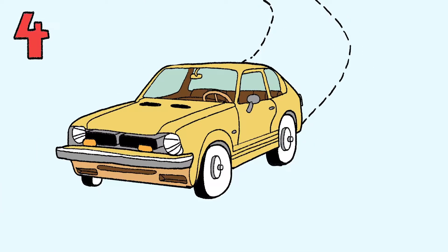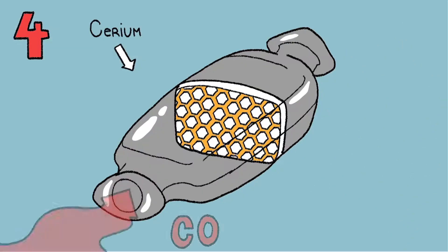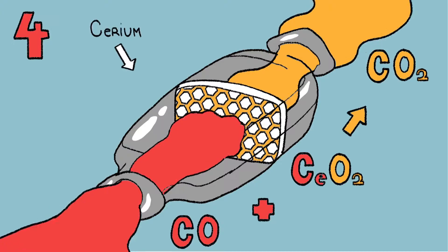Since the 1980s, cerium has been used in catalytic converters to reduce the carbon monoxide in car exhaust.